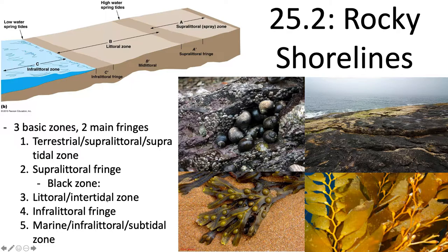Then you have the littoral zone or intertidal zone, which is covered and uncovered daily by the tides. You get lots of barnacles in the upper reaches. You also get oysters, mussels, and limpets. Shelled mollusks and gastropods dominate here because they're able to close their shell or push down onto the rock to prevent their soft body from desiccation. Barnacles are actually Crustacea, while oysters and mussels are mollusks.